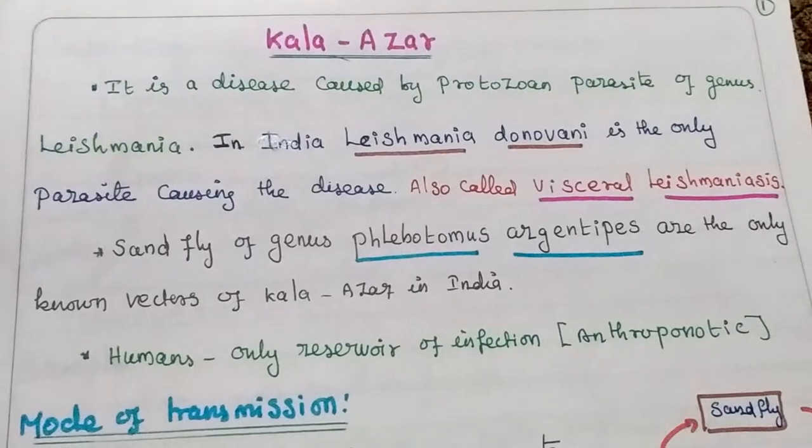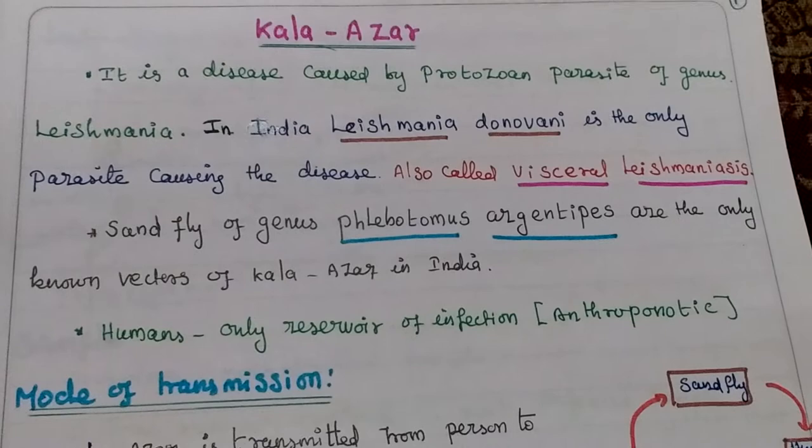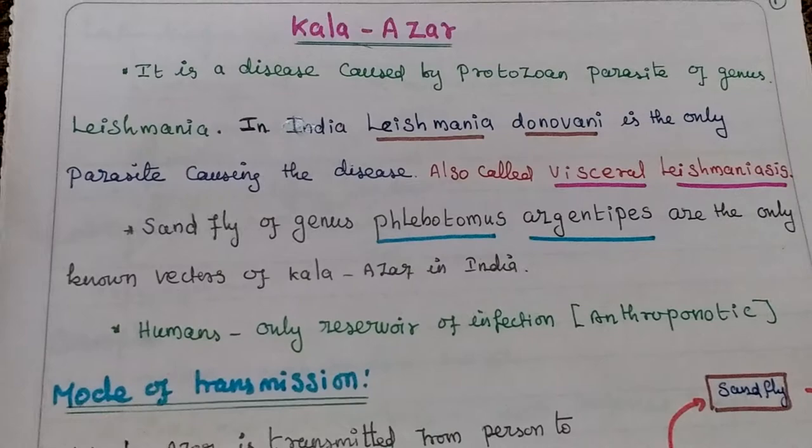Kala Azar is a disease caused by a protozoan parasite of the genus Leishmania. In India, Leishmania donovani is the only parasite causing this disease. It is otherwise called visceral leishmaniasis.